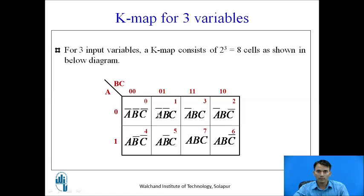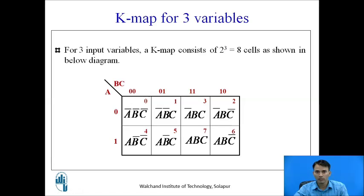For 3 input variables, the K-map has 2 raised to 3, that is 8 cells. Variable A is taken on the row side and B and C are taken on the column side. A may have value 0 or 1, and B and C follow values 00, 01, 11, 10 because we are following grey code. So total 8 cells are there.